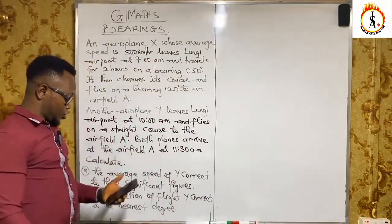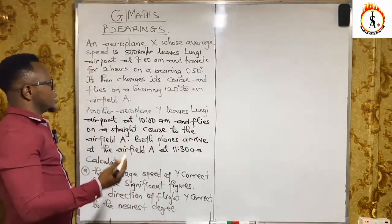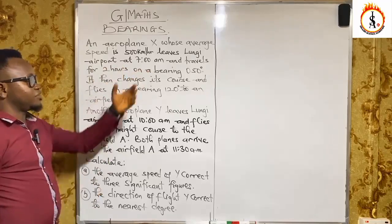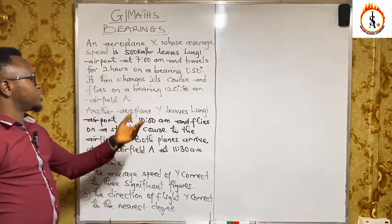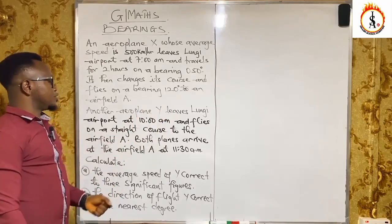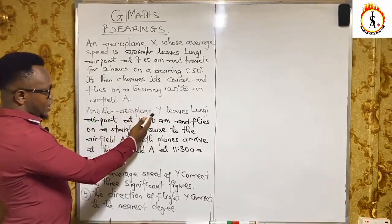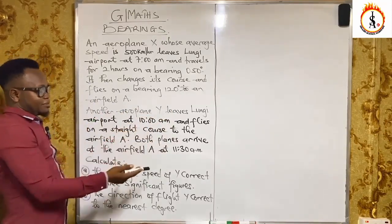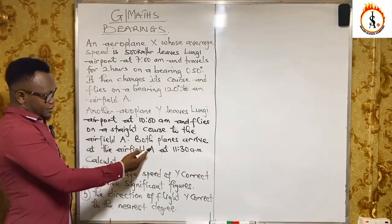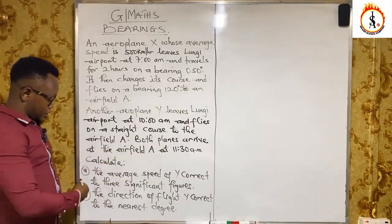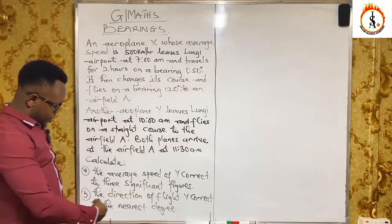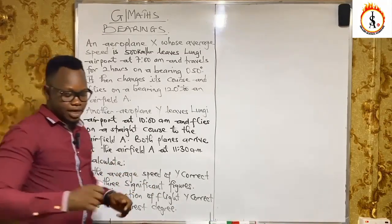The question says: an airplane X, whose average speed is 500 kilometers per hour, leaves Lungi Airport at 7 a.m. and travels for two hours on a bearing of 050 degrees. It then changes course and flies on a bearing of 120 degrees to an airfield A. Another airplane Y leaves Lungi Airport at 10 a.m. and flies on a straight course to airfield A. Both planes arrive at airfield A at 11:30 a.m. Calculate: (a) the average speed of Y correct to three significant figures, and (b) the direction of flight of Y correct to the nearest degree.